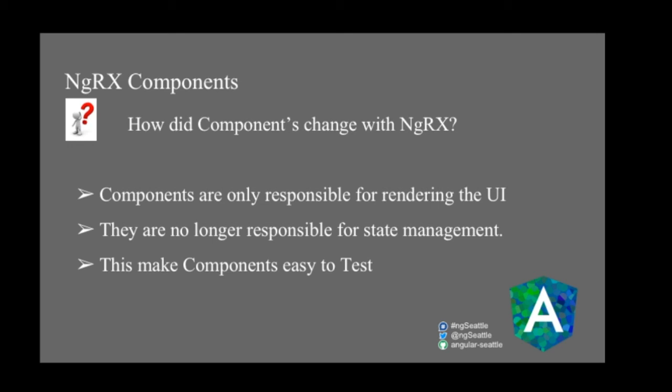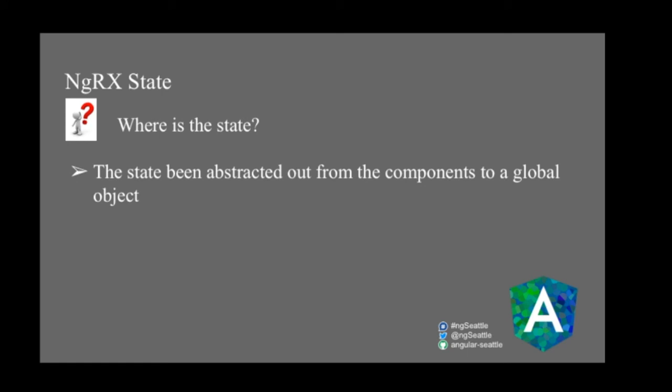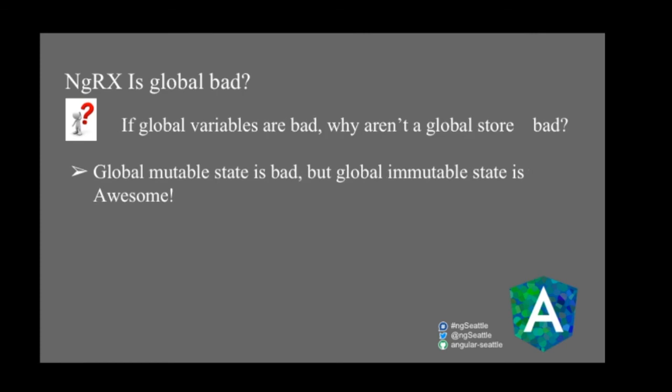With NgRx, components are only responsible for rendering the UI — they are no longer responsible for state management, making them very easy to test. State management lives exclusively in the reducer: the reducer copies the current state and updates it, making it a pure function and also easy to test. State is abstracted out of the component into a central store at the global level. Global mutable state is bad, but global immutable state is actually great — because nobody can change it.